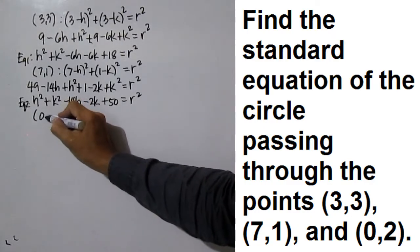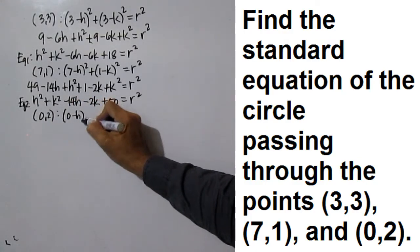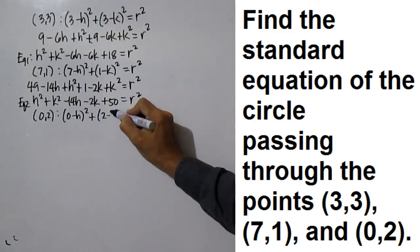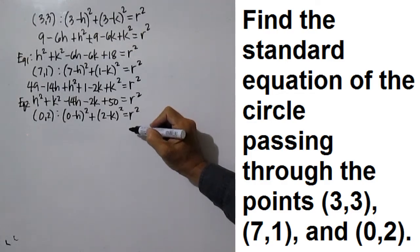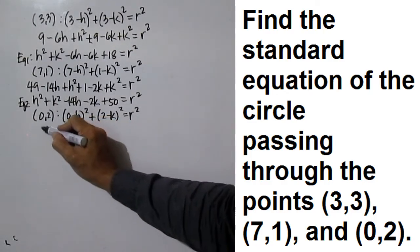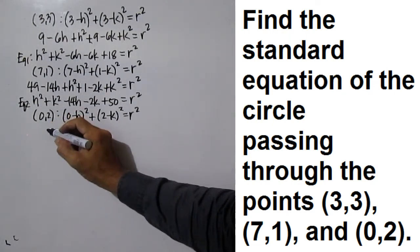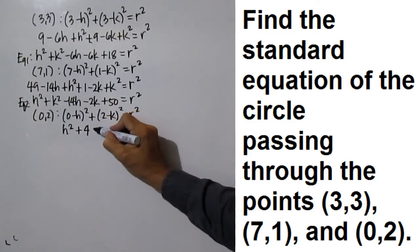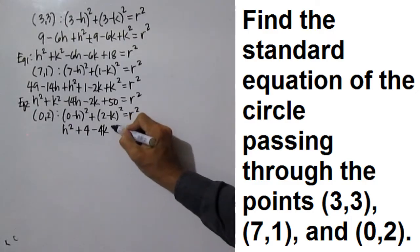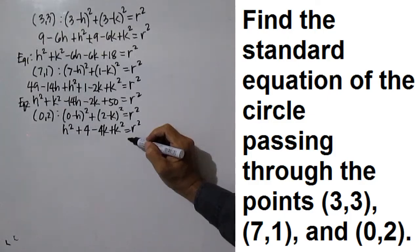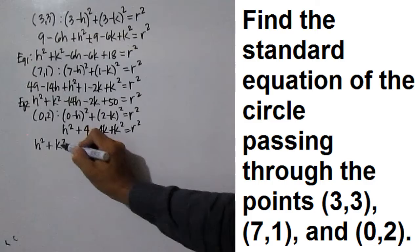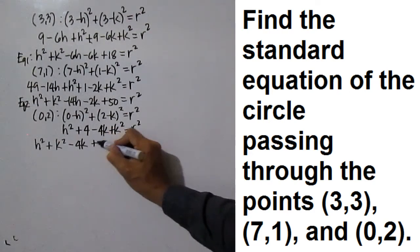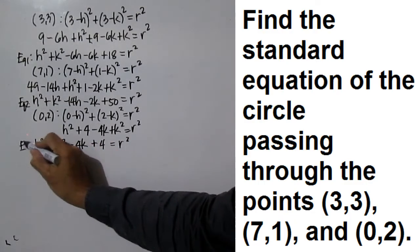For point (0, 2): (0 minus h) squared plus (2 minus k) squared is equal to r squared. Squaring the binomials: h squared plus 4 minus 4k plus k squared equals r squared. This simplifies to h squared plus k squared minus 4k plus 4 equals r squared. This is equation 3.